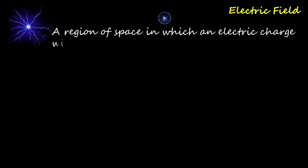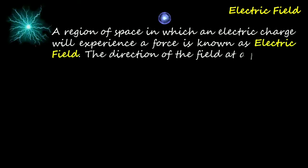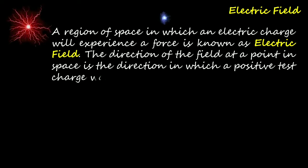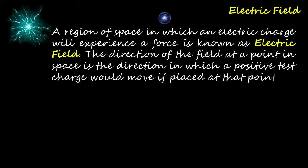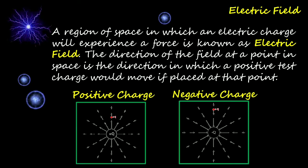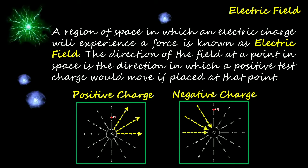A region of space in which an electric charge will experience a force is known as an electric field. The direction of the field at a point in space is the direction in which a positive test charge would move if placed at that point. Observe the direction of electric field lines — the positive test charge experiences a force pushing away from positive Q, while for the negative charge the force acts in the opposite way, moving towards the negative Q.